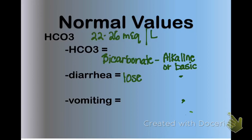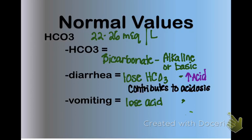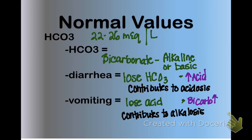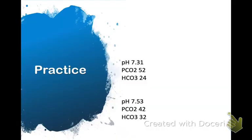Normal bicarb is 22 to 26. Bicarbonate is usually considered alkaline or basic. With diarrhea you will lose your bicarb, so you'll have an increase in acid — this contributes to acidosis. With vomiting you're losing acid from your stomach, so you'll have an increase in bicarb, which contributes to alkalosis.